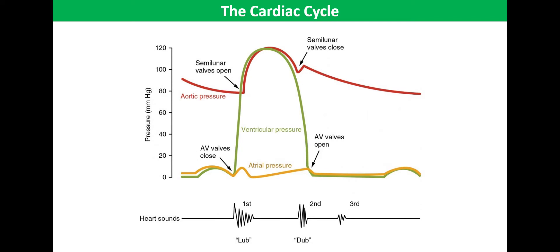We're now going to look at the ventricular pressure and that's represented by the green line. Ventricular pressure is low at first, but gradually increases as the ventricles fill with blood as the atria contract. The left atrioventricular valves close and the pressure rises dramatically as the thick muscular walls of the ventricles contract.